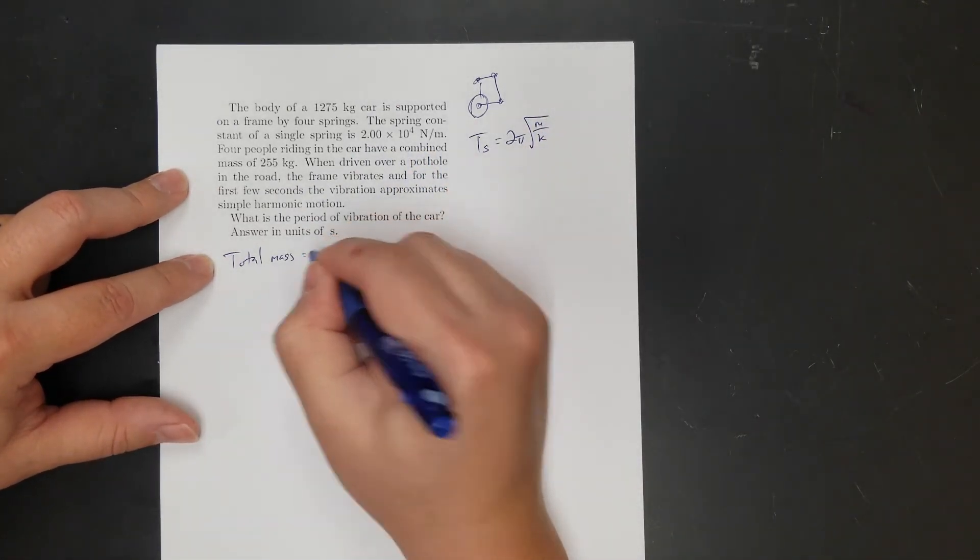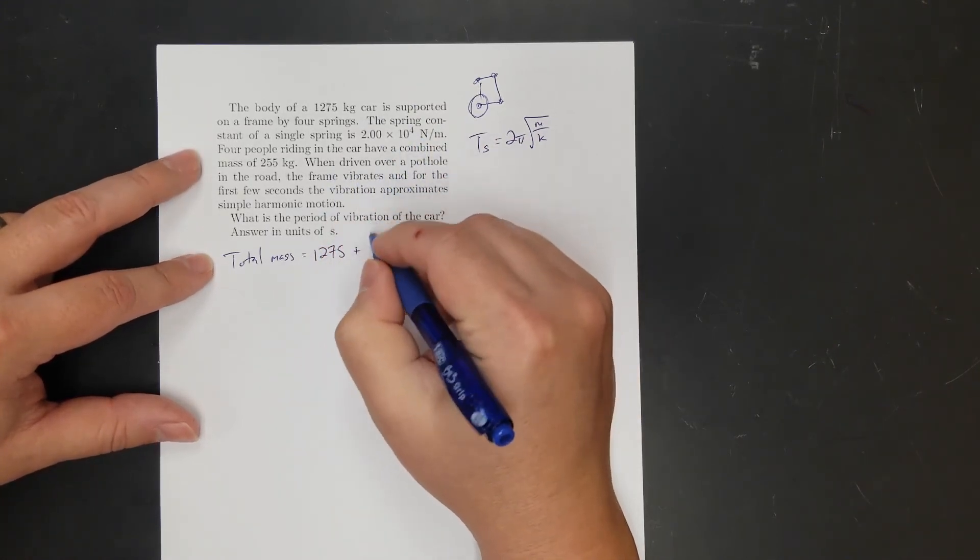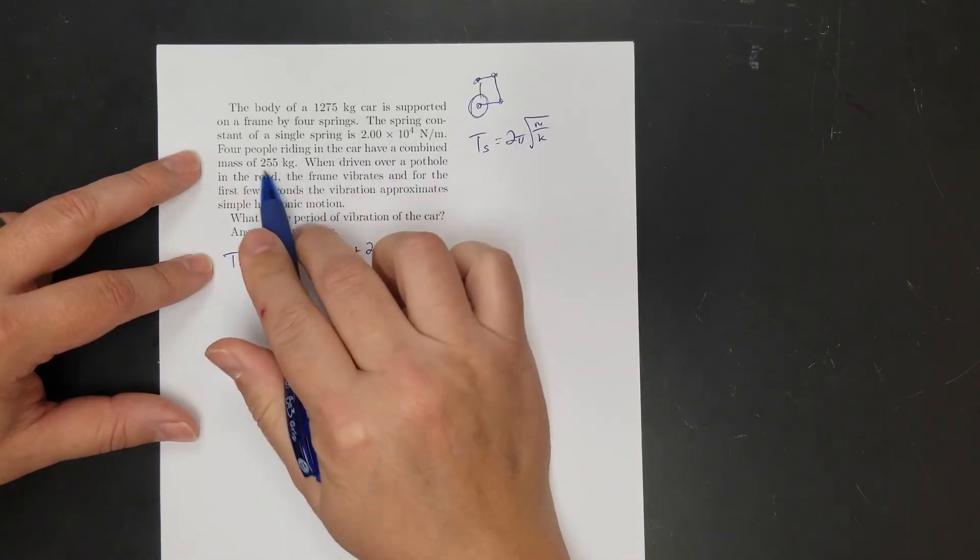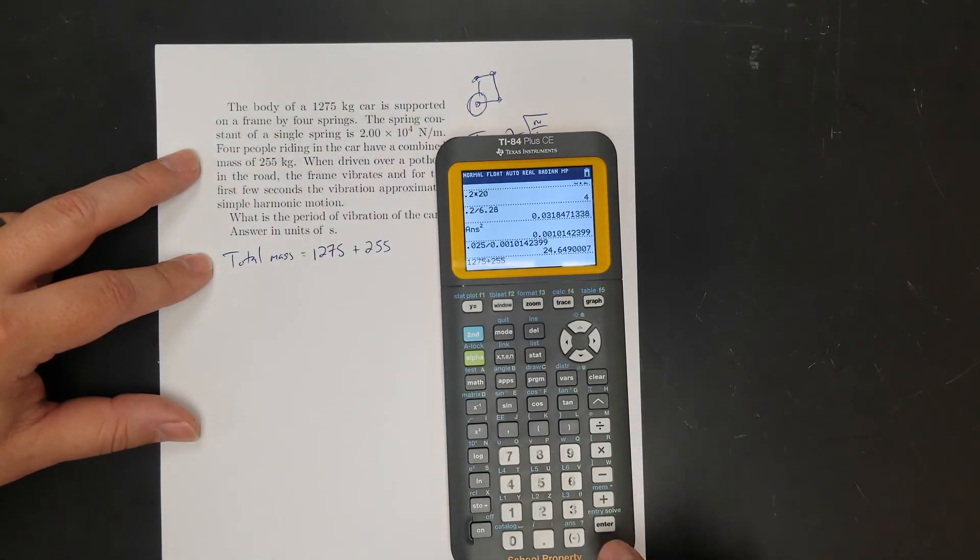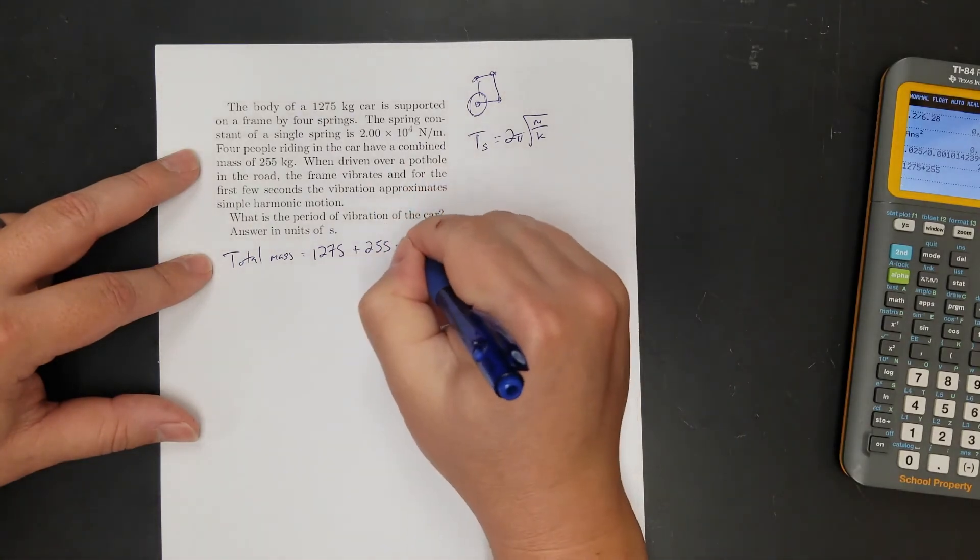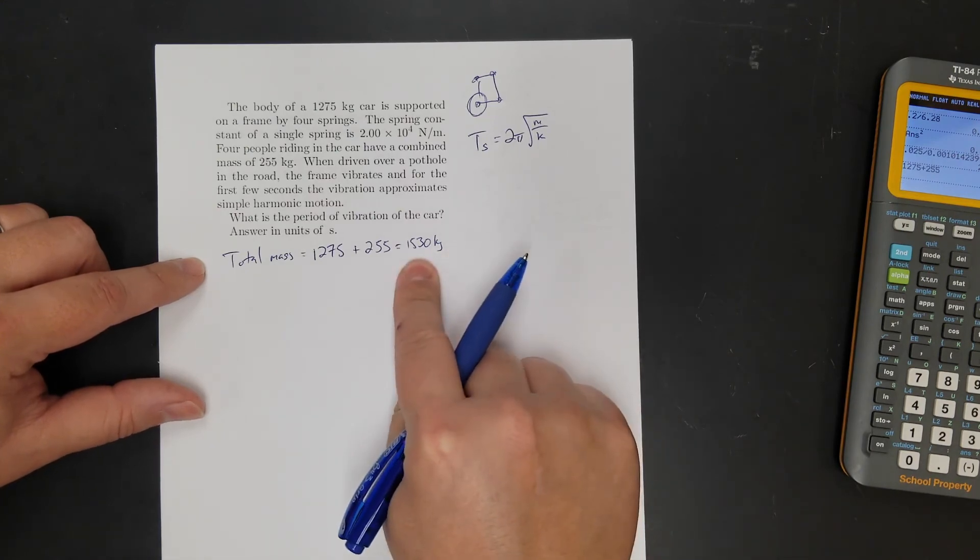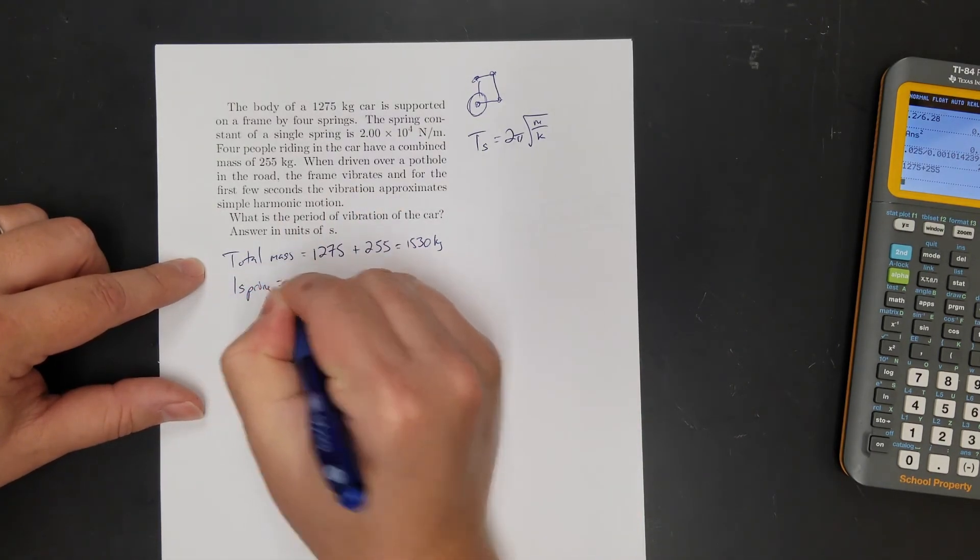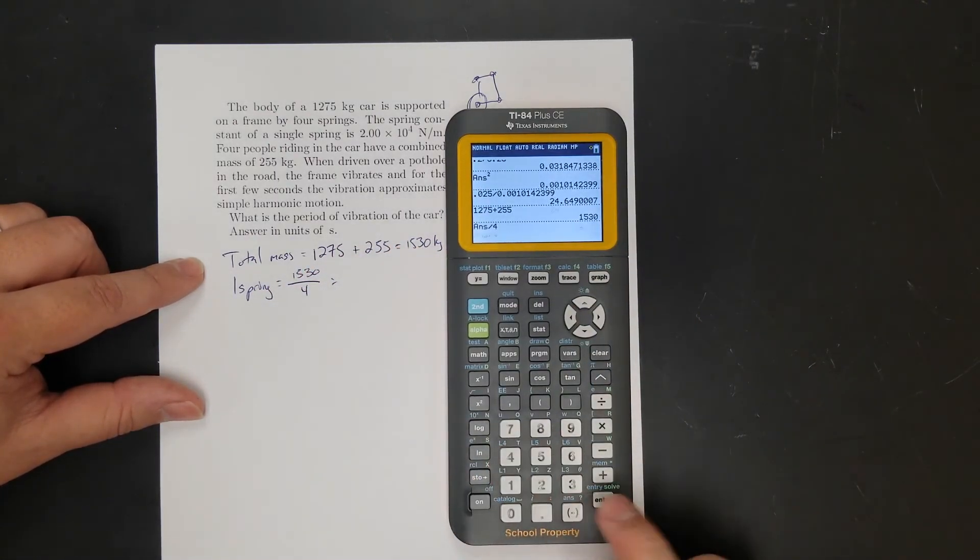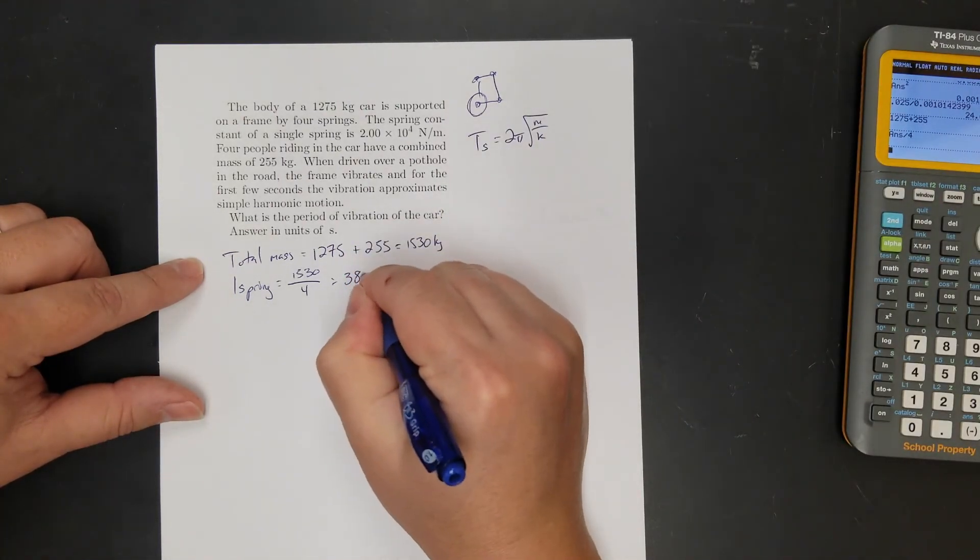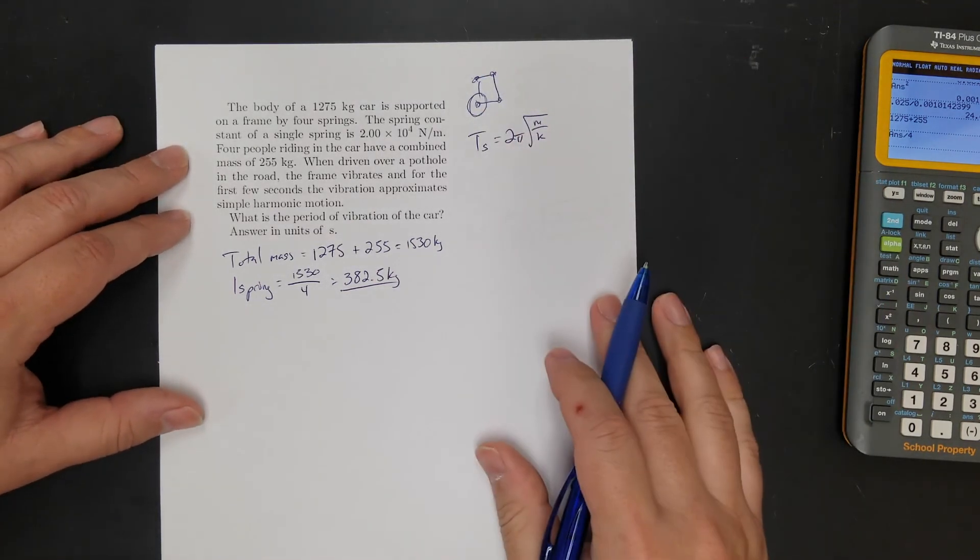So total mass, I need to do that first. So the whole car is 1275 plus the four people, 255 kilograms. So 1275 plus 255. That's my total mass of the car, 1530 kilograms. Okay, so that's on four springs. So that means one spring has to hold up 1530 divided by four. So let's take that divide by four. 382.5. 382.5 kilograms. So one spring is holding that. Because that weight is being evenly distributed among four springs.